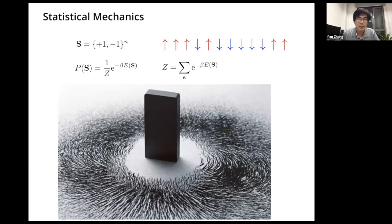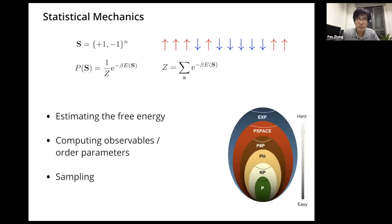In statistical mechanics, given a configuration S, which is a vector with N elements each taking a binary value of +1 or -1, each configuration is assigned a Boltzmann distribution where E is the energy, beta is the inverse temperature, and Z is the partition function — the normalization function for this Boltzmann distribution. The problem we are interested in includes how to estimate the free energy, which is the most important part. If we can estimate the free energy, we can do anything we want — we can take it as a generating function to compute moments of the distribution.